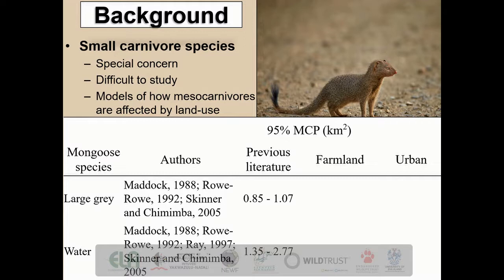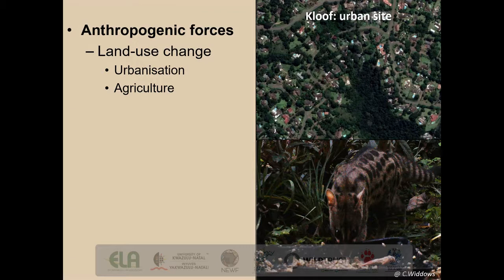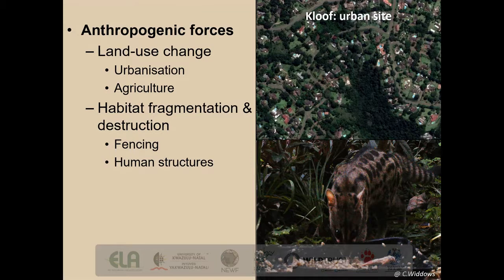Gaining insight into home range and habitat selection can give us overall insight into their behaviour as well as their movement ecology, and this is important for their overall conservation. One of the greatest threats to biodiversity globally is anthropogenic land use change through the processes of urbanization and agriculture. These anthropogenic forces fragment habitats and often result in destruction of habitats available to biodiversity. Simple structures such as fencing and buildings often disrupt movement paths of animals.